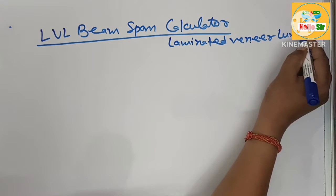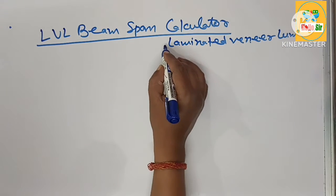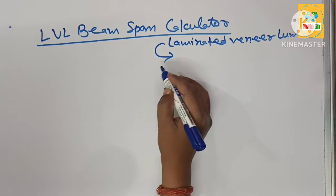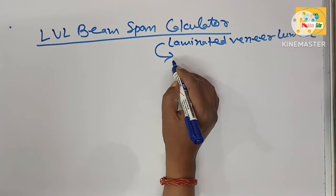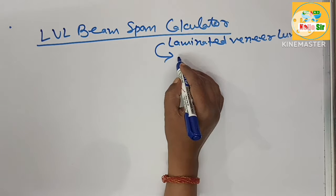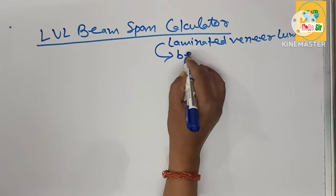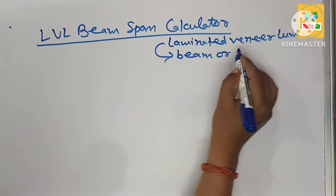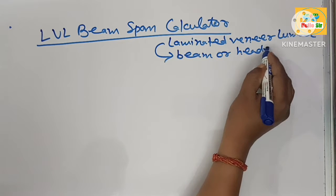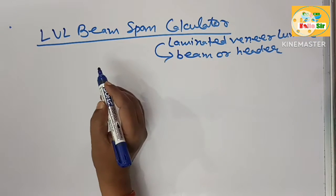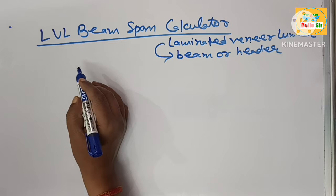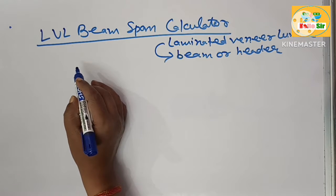LVL is used in building construction and is an engineered wood product made from assembled thin sheets of wood with adhesive material, used as beams or headers in building construction. You can figure out the correct LVL beam size according to a thumb rule.